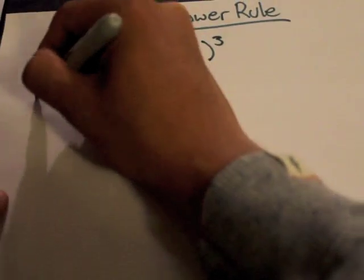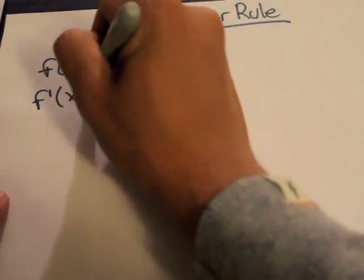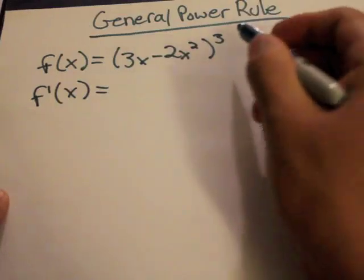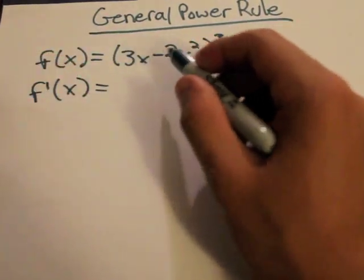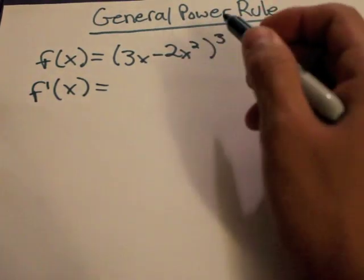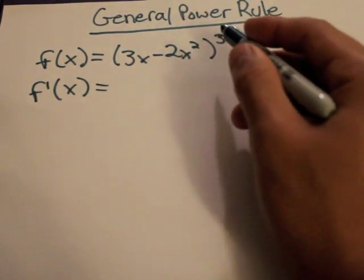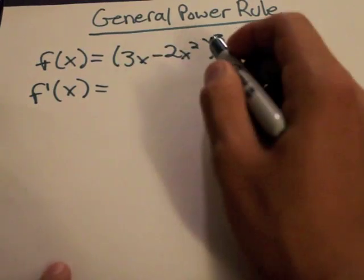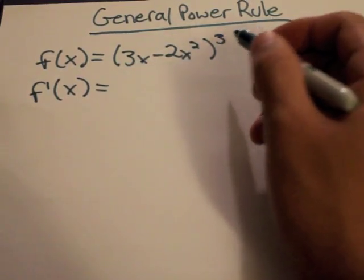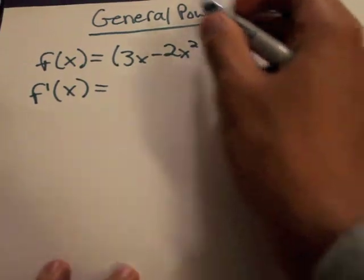So the derivative equals... First you would use the power rule instead of actually cubing 3x minus 2x squared. To use the power rule, we bring the 3 down, so it becomes 3 times, in parentheses, 3x minus 2x squared.